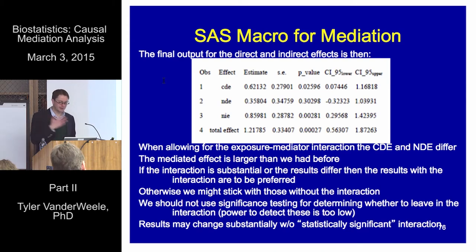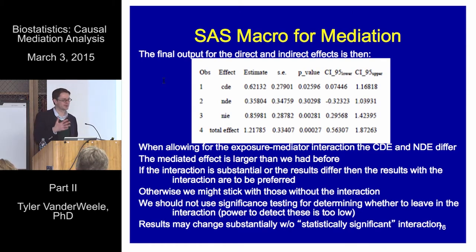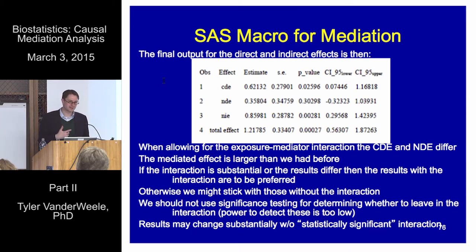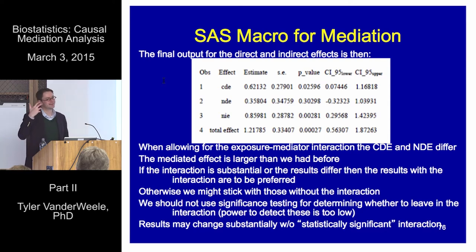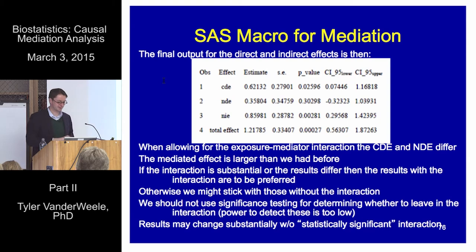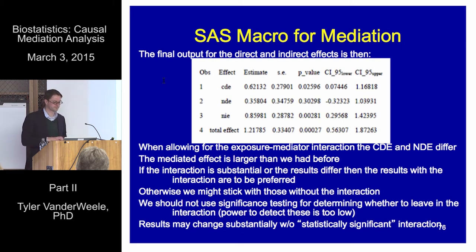In terms of deciding whether to include interactions, it's generally better not to rely on the interaction p-value. Better to fit it with and without: if the results are quite different, stick with the model with the interaction; if the results are quite comparable and the interaction estimate is small, it's easier to report results without the interaction, which corresponds to the standard product and difference methods.